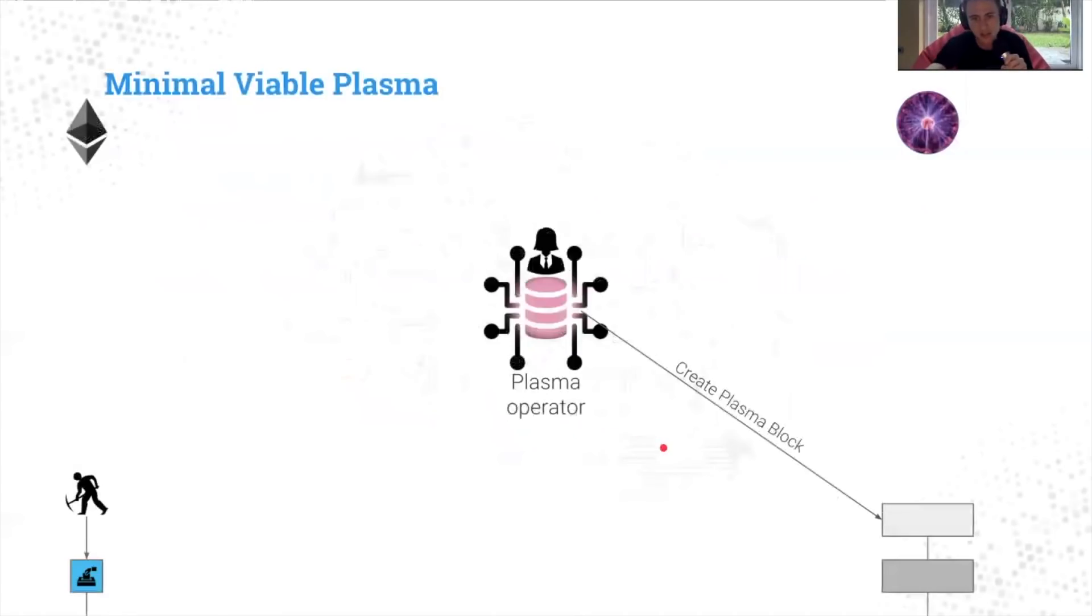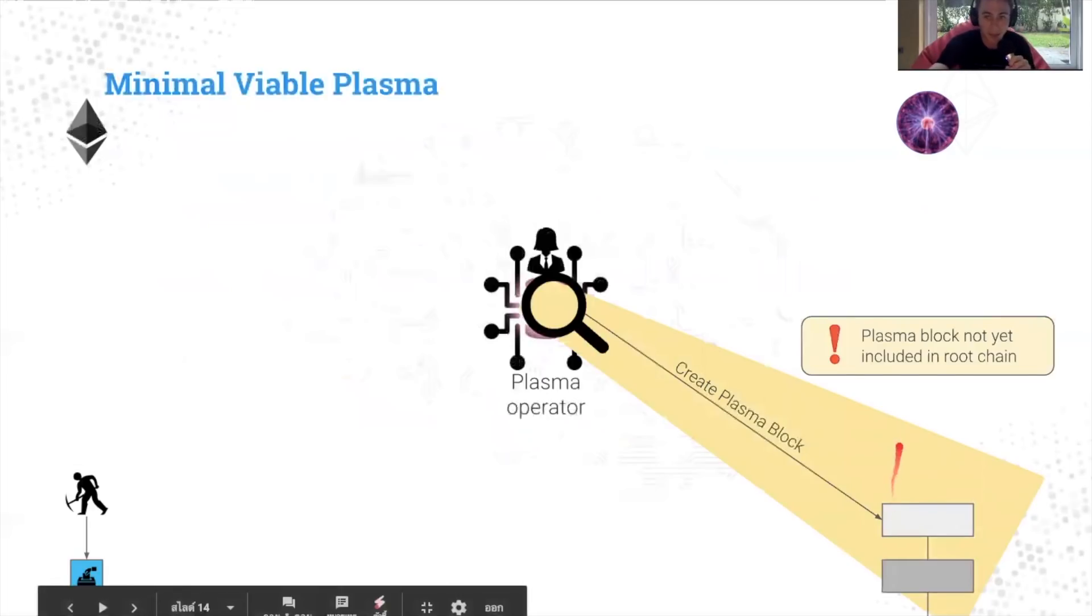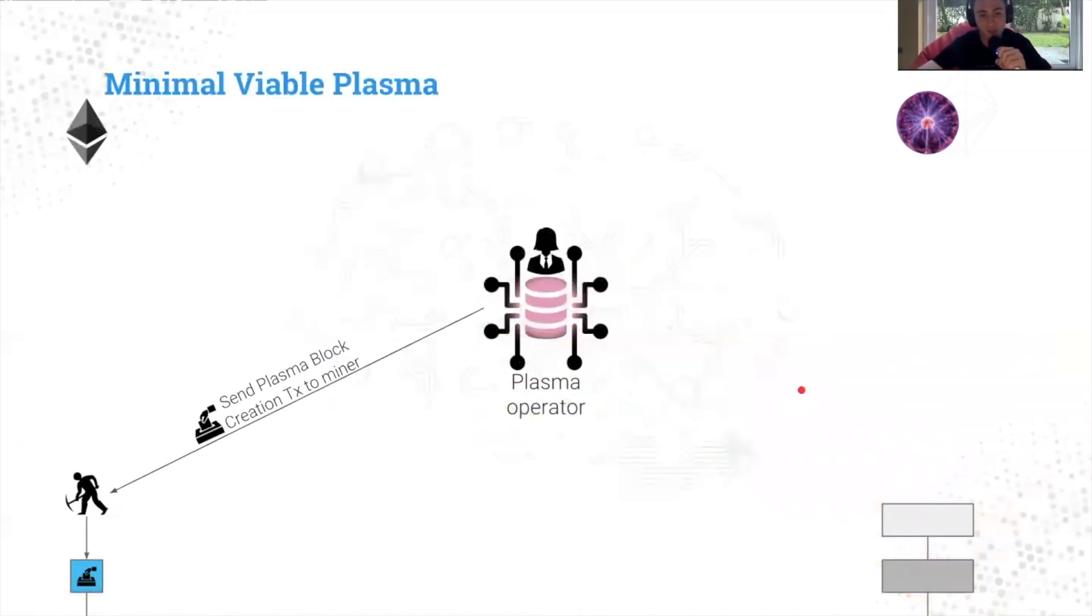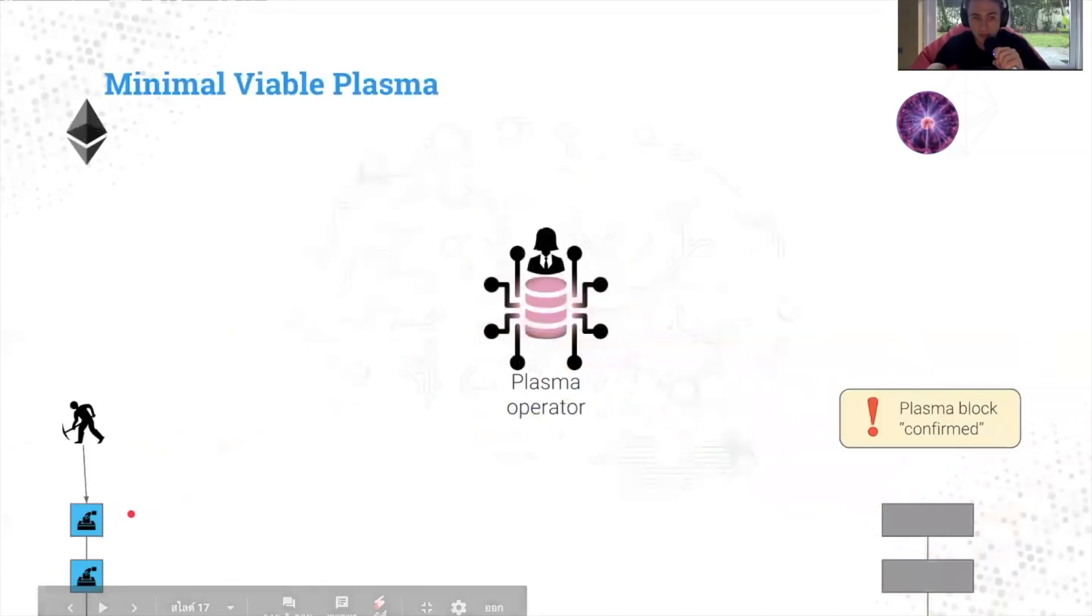First, the operator creating a block. So the Plasma Chain operator creates a Plasma block. You can see right here, it's light gray, which means it has not yet been confirmed. And this basically means that this is just created on the Plasma operator's kind of database. And any client can query that REST API and get the Plasma Chain, but it is not actually confirmed on the main network. So to actually confirm it, the operator sends a transaction to the miner, which includes the block hash. So now it has created a block on the main chain, and it is confirmed grayed out. Lovely.